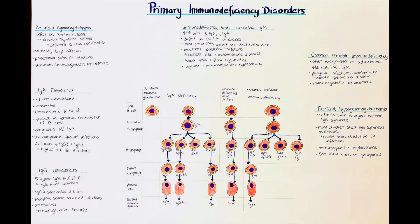The IgG antibodies also exist as four subclasses: IgG1, IgG2, IgG3, and IgG4. Patients may have a subclass deficiency even if the total number of IgGs is normal. The reason for the defect is thought to be genetic, but the mechanism is not clear. These patients are also more prone to pyogenic infections, and in patients with severe and recurring infections, antibiotics can be given prophylactically and immunoglobulin replacement therapy may be beneficial.